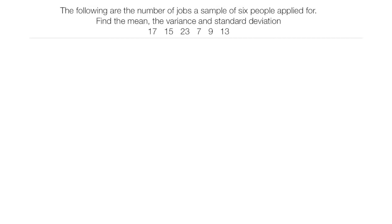A typical problem looks like this. The following are the number of jobs a sample of six people applied for. Find the mean, the variance, and standard deviation. What you're really interested in are just the numbers and how to calculate the variance and standard deviation, and that's what I'm going to do here.